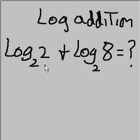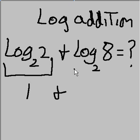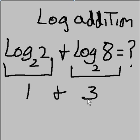2 to what power gives me 2? The answer is 2 to the first — 1. 2 to the 1 power gives me 2. Plus, 2 to what power gives me 8? Well, 2 times 2 times 2 equals 8, so that's 3. 1 plus 3 equals 4. So log base 2 of 2 plus log base 2 of 8 equals 4.